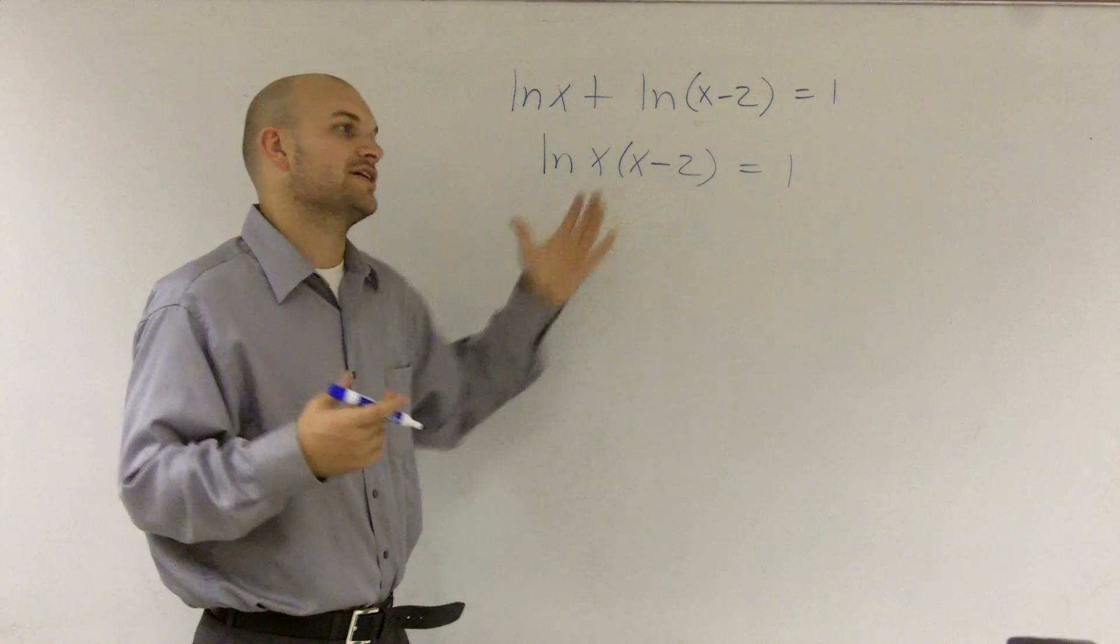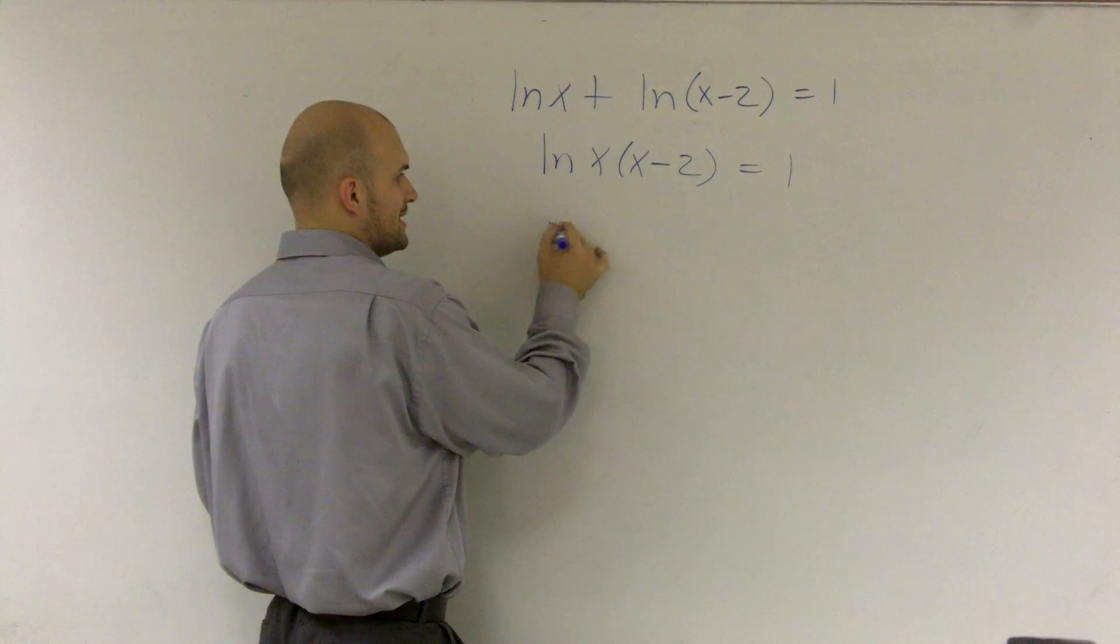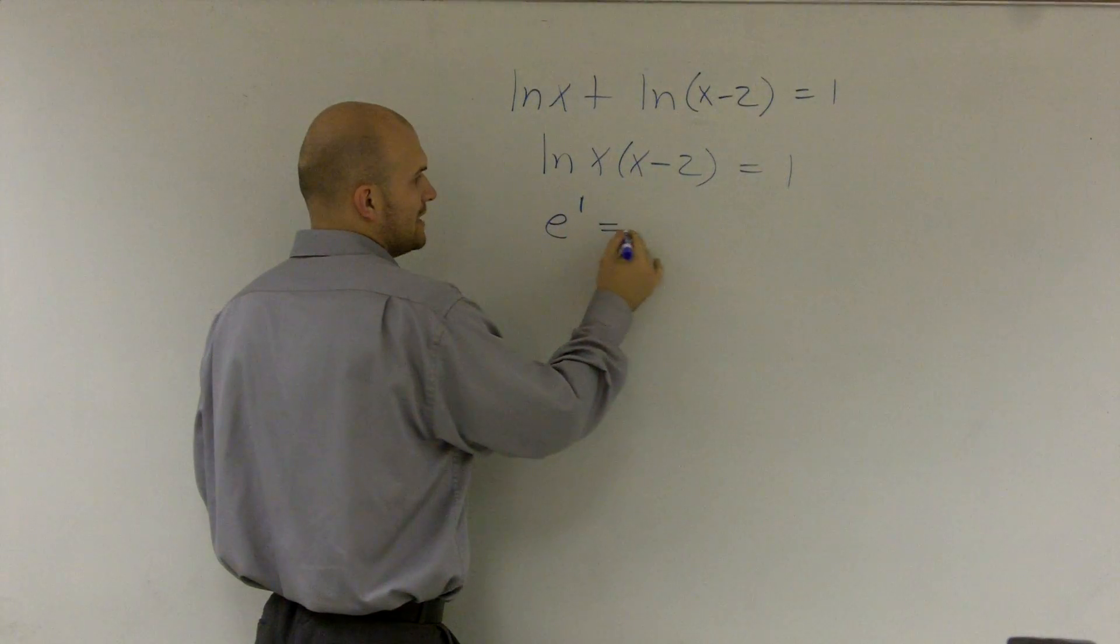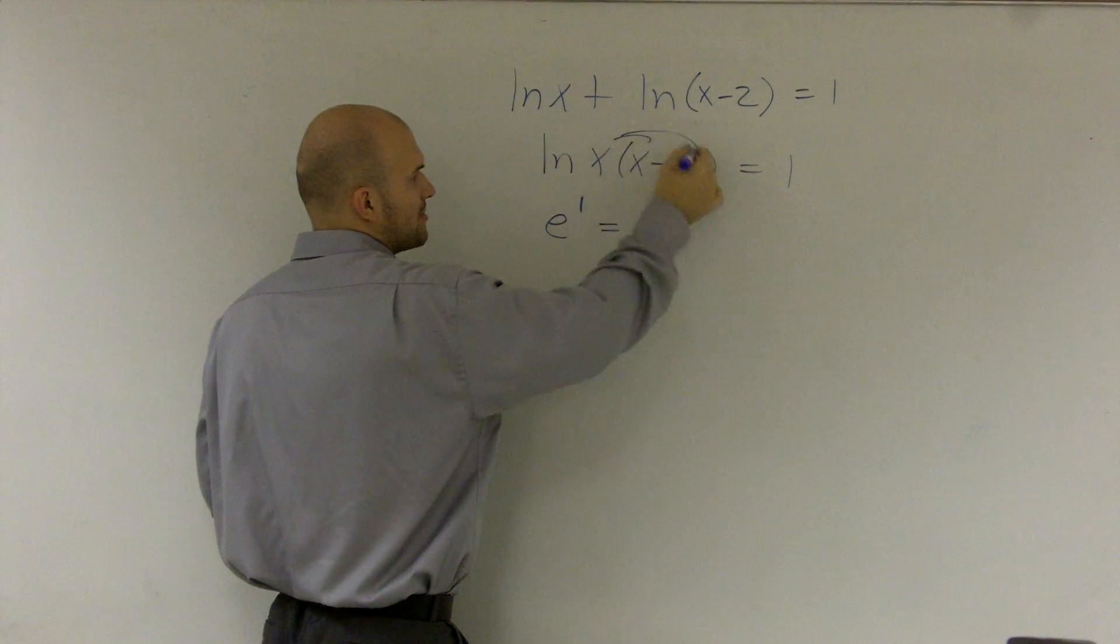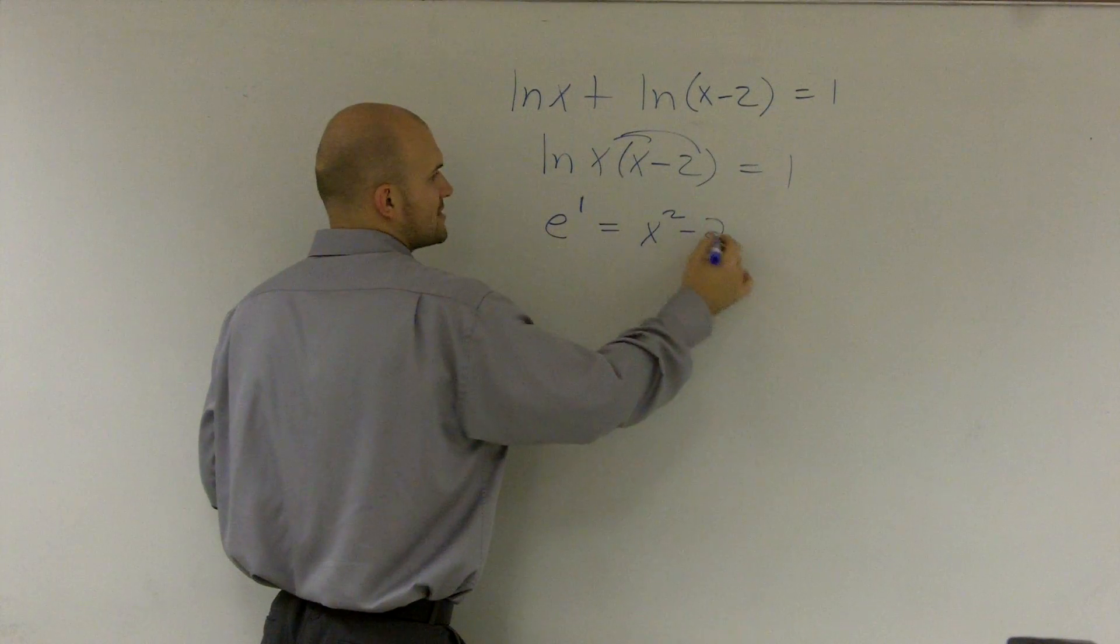This is logarithmic form. I can transfer now to exponential form, which will give me e to the first power equals, and let's distribute this, x squared minus 2x.